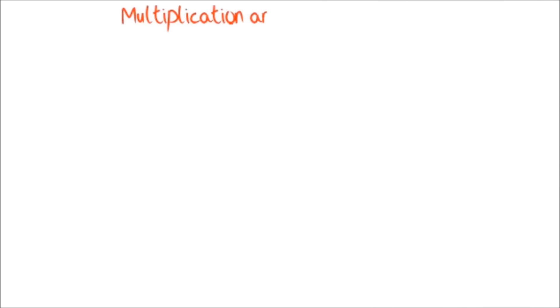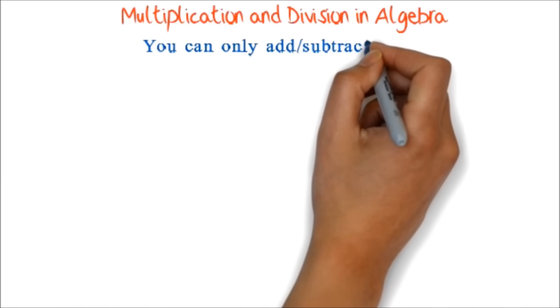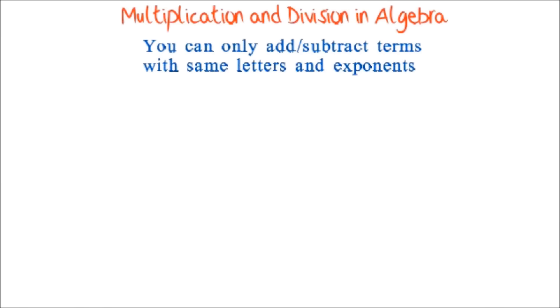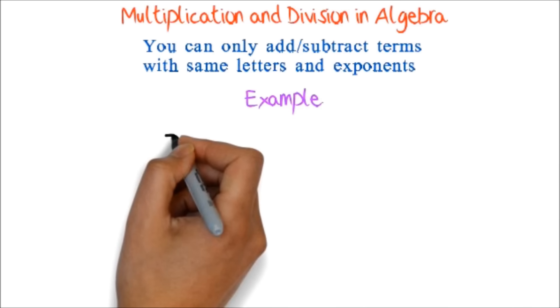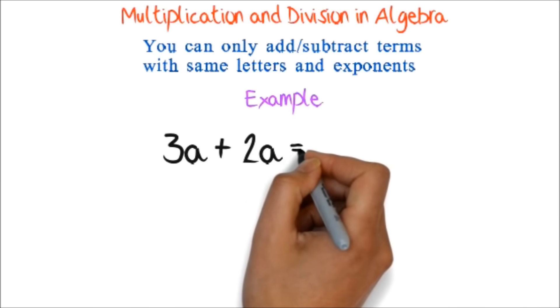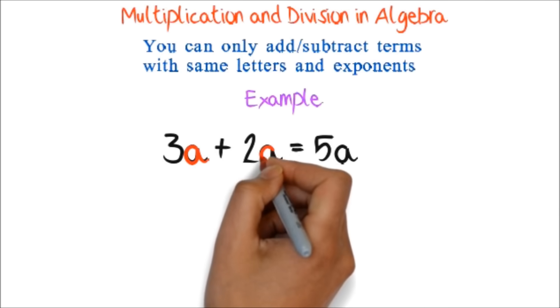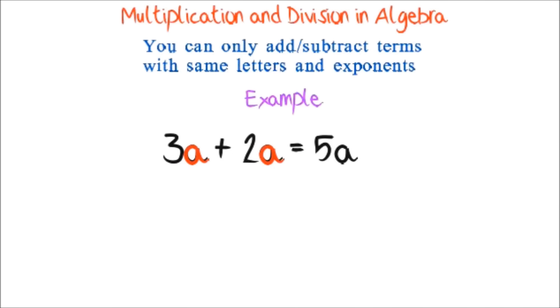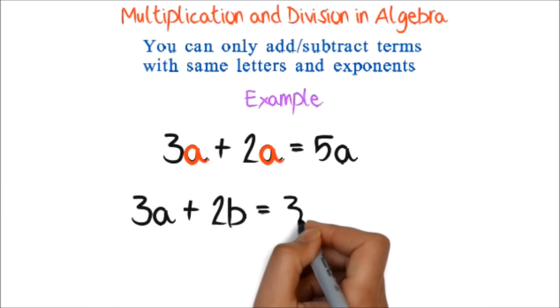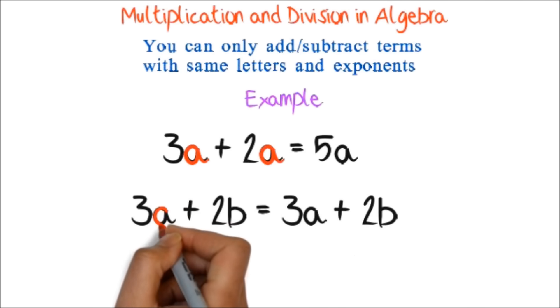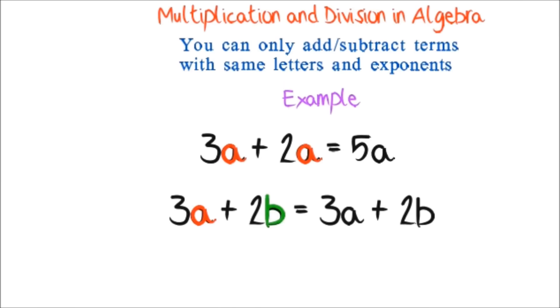Multiplication and division in algebra. When we learnt addition and subtraction in algebra, we said that letters must be exactly the same before you can add or subtract them. Example, we can add 3a and 2a because both have the same letters after the number. We also said, we cannot add 3a and 2b because the letters are different. For multiplication and division, it doesn't matter the letters. You can always work on them.